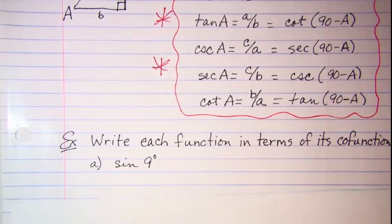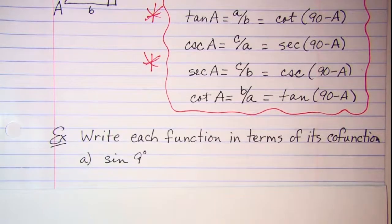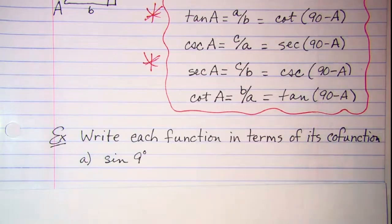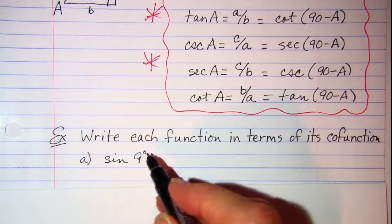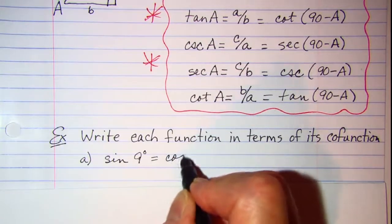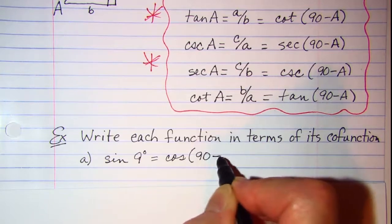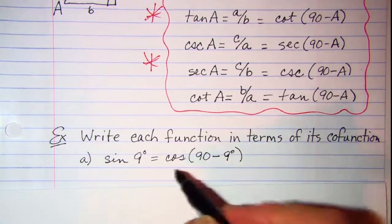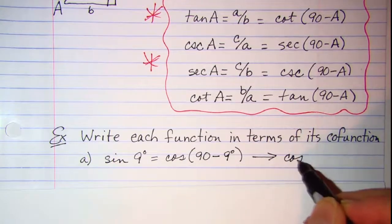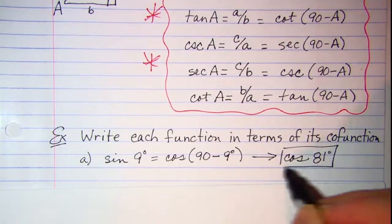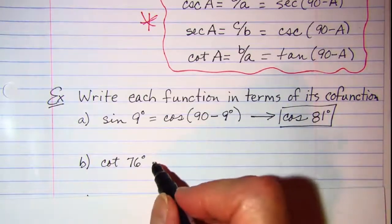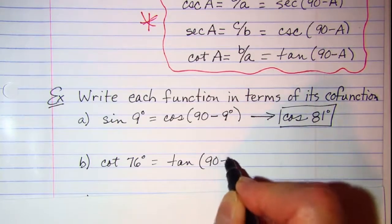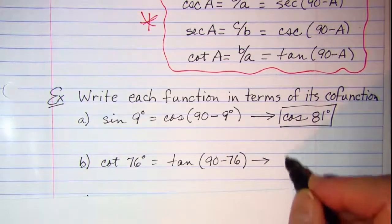Let's do a problem with our co-function identities. The first example says to write each function in terms of its co-function. Sine has a co-function of cosine, so sine of 9 degrees equals cosine of 90 minus 9, which is cosine of 81 degrees. For cotangent of 76 degrees, the co-function is tangent, so that would be tangent of 90 minus 76, which gives tangent of 14 degrees.